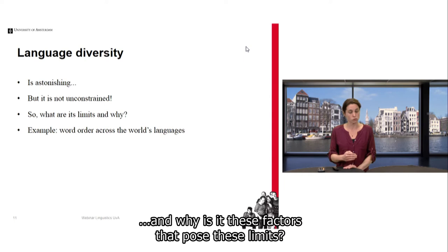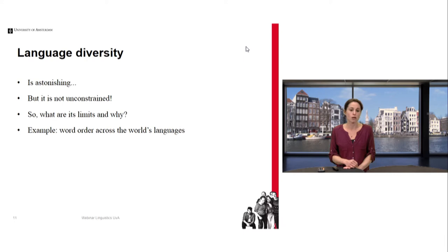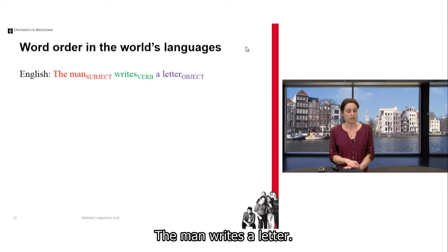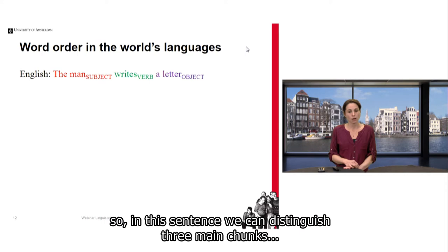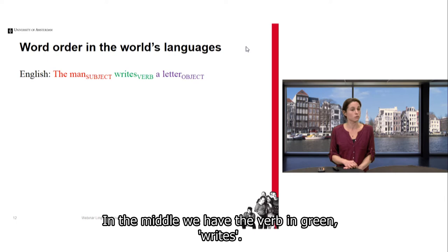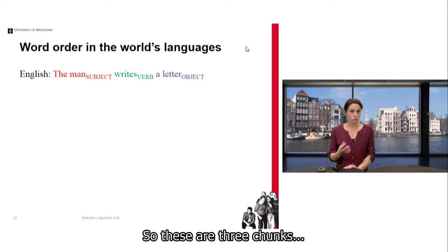A simple sentence in English might look like this: 'The man writes a letter.' In this sentence we can distinguish three main chunks: the man — the subject in red — in the middle we have the verb in green, 'writes', and at the end in purple the object, 'a letter'. These are three chunks ordered in a particular way in English, but other languages may have different orderings of similar chunks.